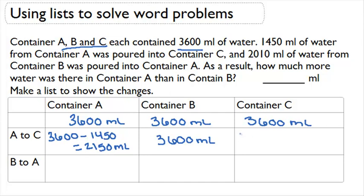Now C is going to get bigger since we're pouring water from A into C. So we're going to start off with the same 3,600. And this time we're going to add the 1,450. Because it's going from A into C. That's going to give us a total of 5,050. And again, that's in milliliters.